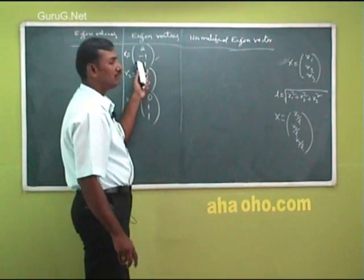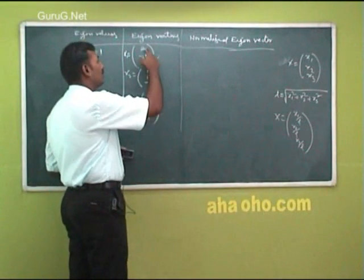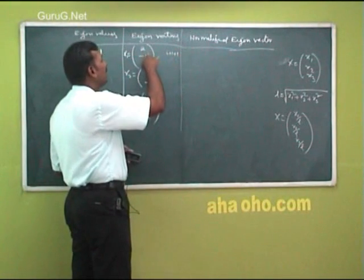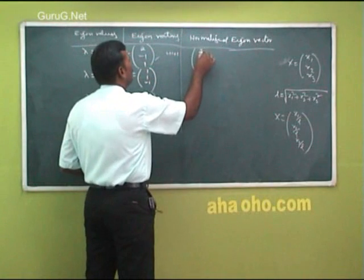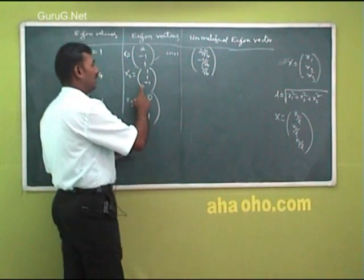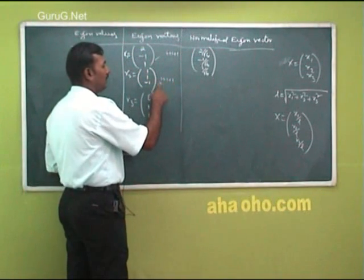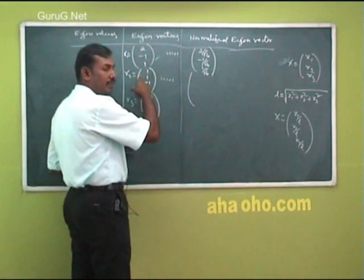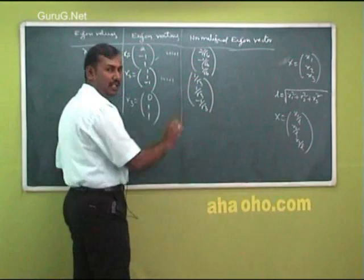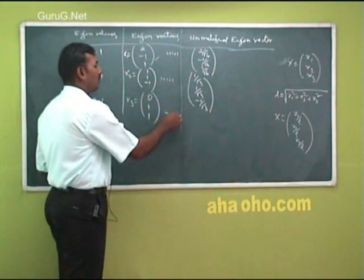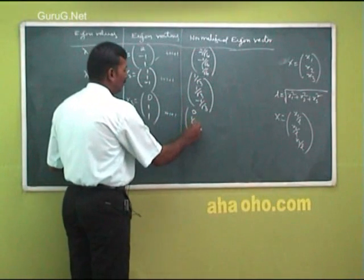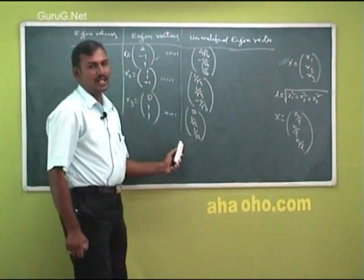So here for the first eigenvector [2, -1, 1]: the sum of squares is 4 plus 1 plus 1 equals 6, so l equals root 6. Divide each element by root 6: the normalized eigenvector is [2/√6, -1/√6, 1/√6]. For the second eigenvector [1, 1, -1]: sum of squares is 3, so divide each element by root 3: [1/√3, 1/√3, -1/√3]. For the third eigenvector [0, 1, 1]: sum of squares is 0 plus 1 plus 1 equals 2, so divide each element by root 2: [0, 1/√2, 1/√2]. These vectors are called normalized eigenvectors.